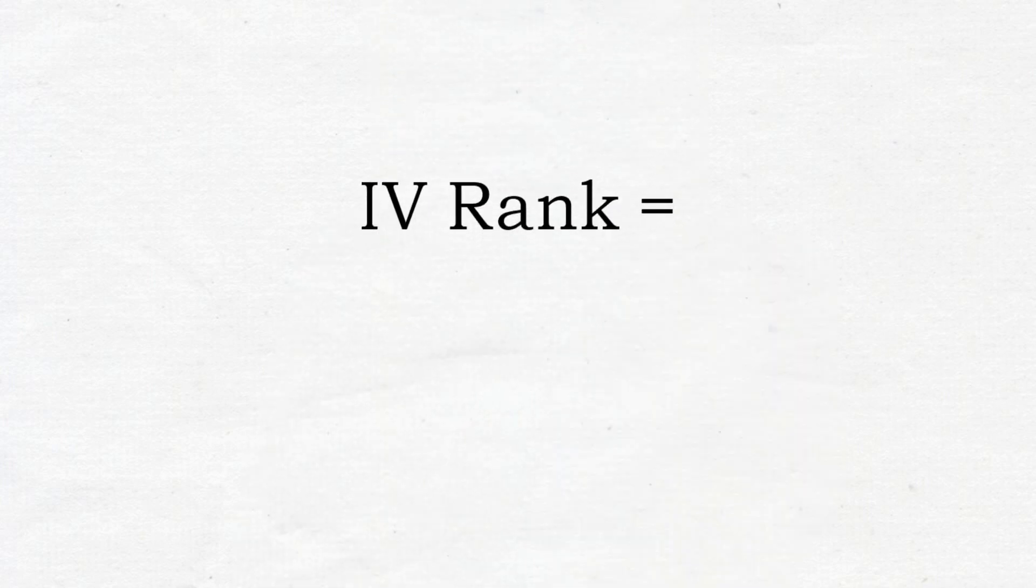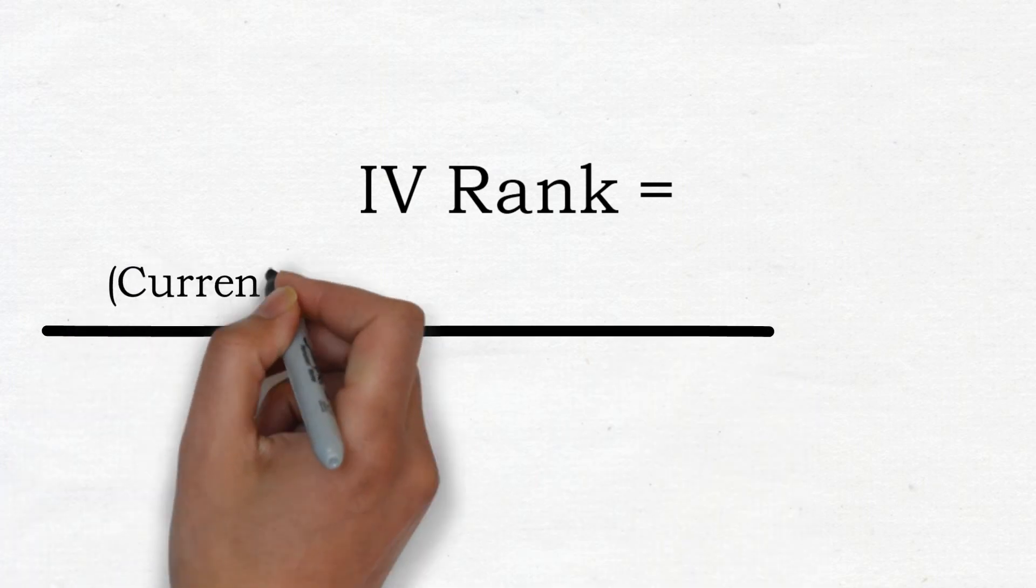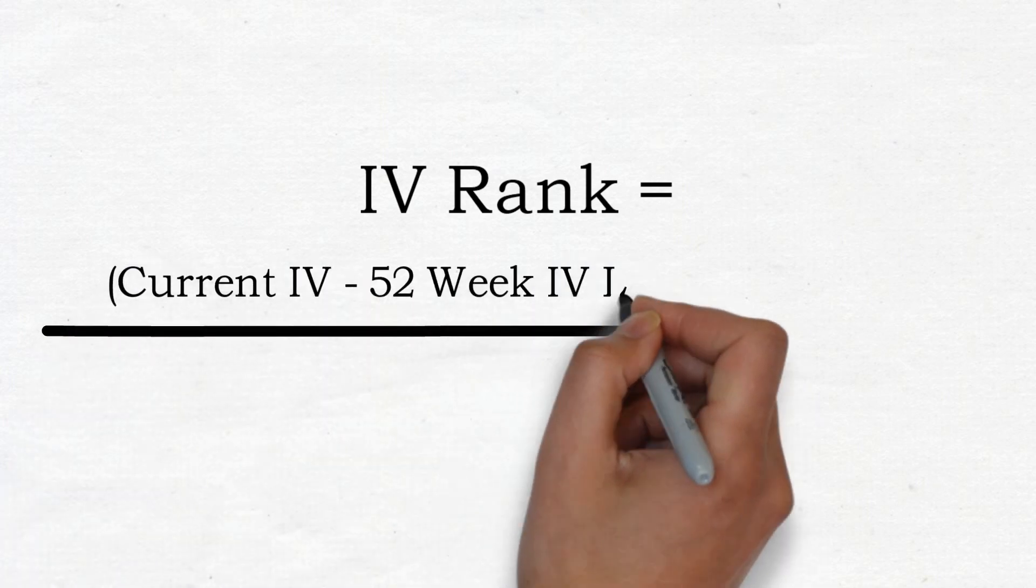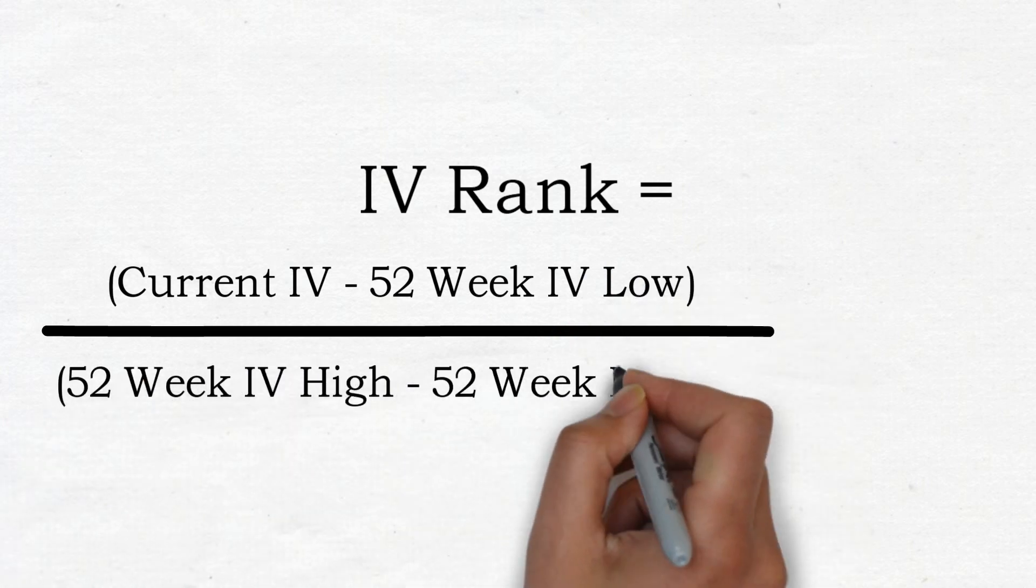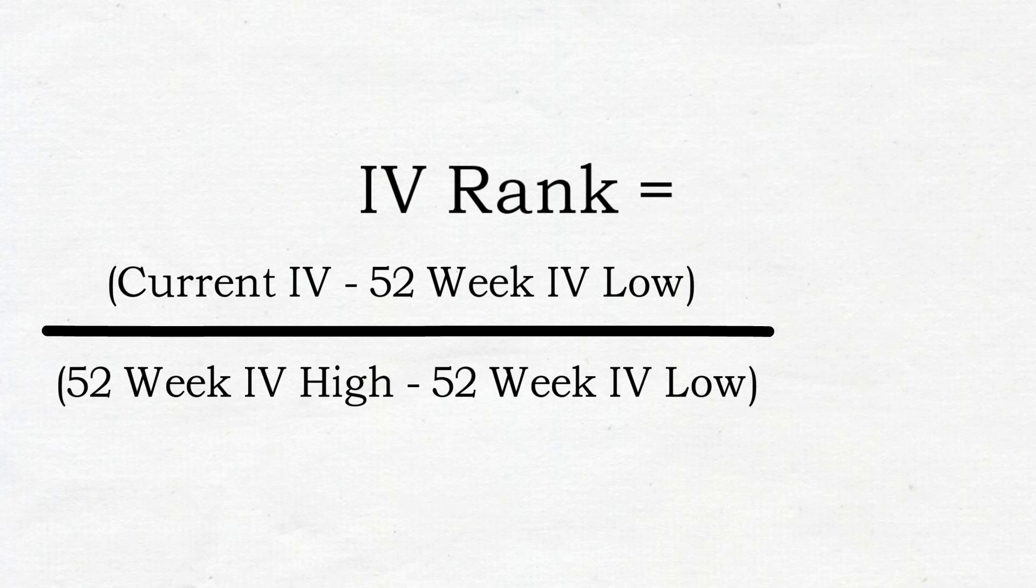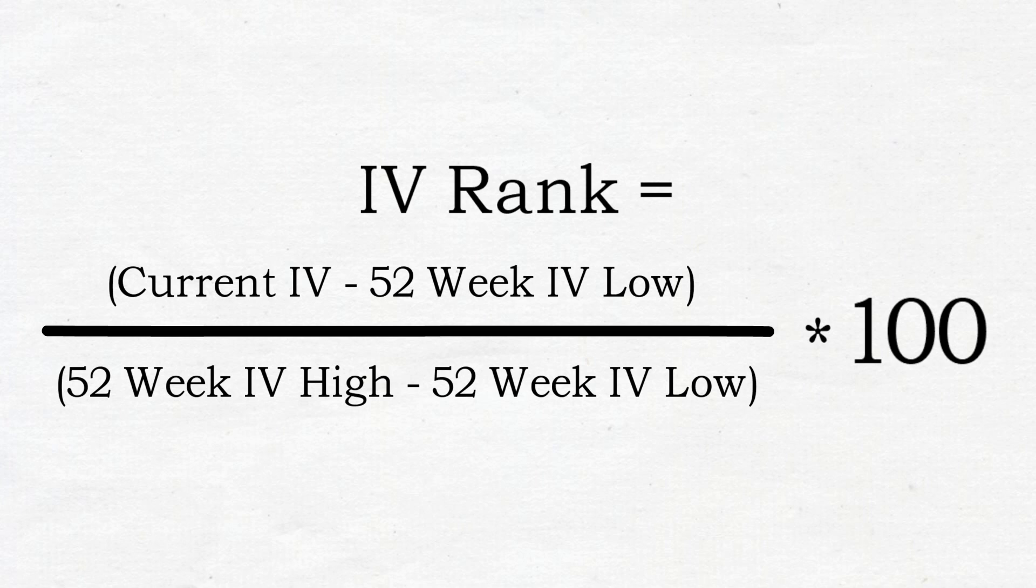Here is the formula that is most commonly used to calculate IV rank: the current IV level minus the 52-week IV low, divided by the 52-week IV high minus the 52-week IV low, and all of this is multiplied by 100 to get the IV rank.